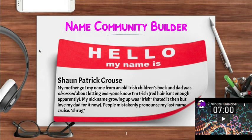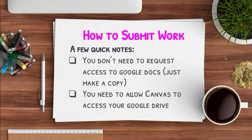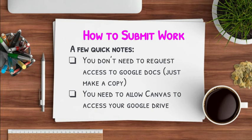After the community builder, I wanted to very quickly review how to submit work. Some people are still having a little bit of trouble, and there are a couple of common issues. First, you never need to ask for or request access to a Google Doc. When you open the document it'll be view only, but you can just make a copy — go to File, Make a Copy, insert your name into the title, and then you can work on that unique copy of your work.